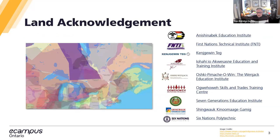I would like to start out today by honoring and acknowledging that the offices of eCampus Ontario are located on the traditional territories of many nations, including the Mississaugas of the Credit, the Anishinaabe, the Chippewa, the Haudenosaunee, and the Wendat peoples, and is now home to many diverse First Nations, Inuit, and Métis. I recognize and am grateful for the legacy of all past, present, and future generations of the First Peoples of this land. I'm joining you today from Fort Frances, Ontario, which is situated in the traditional territories of the Anishinaabe and the Métis people, where it is my great privilege to live, work, and learn.